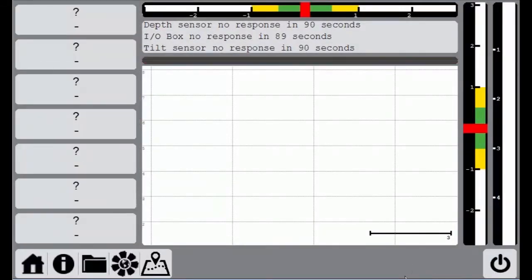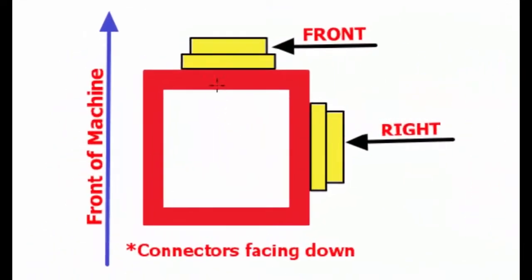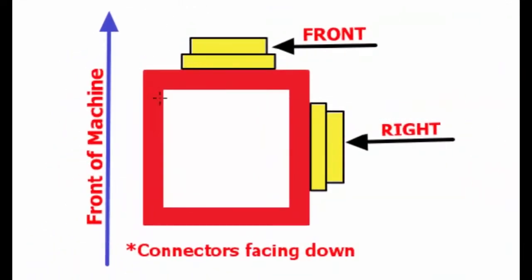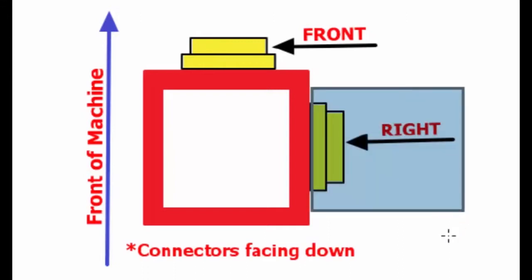So if I bring up this image right here we can see that if the front of the machine is up on the page and the connectors of the tilt sensor are down, this would be mounted in the front whereas this would be mounted on the right hand side.